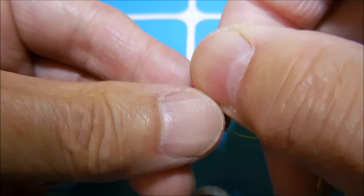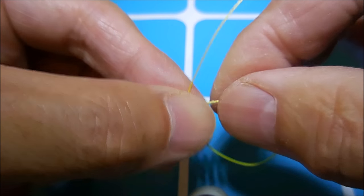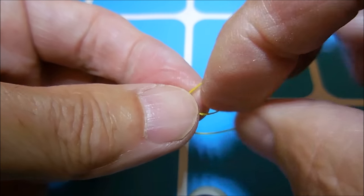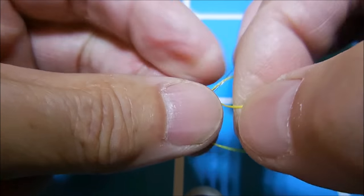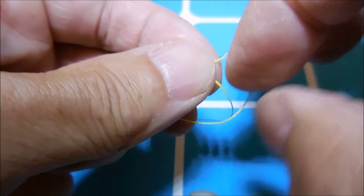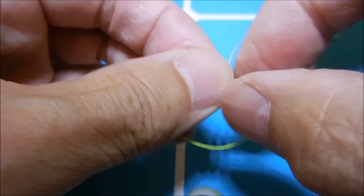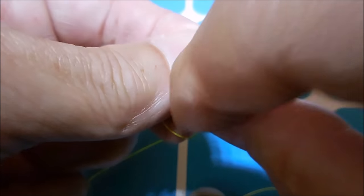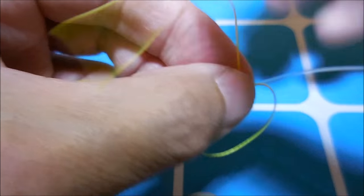Then use the tag end of the braid to make a uni knot on the long end of the mono. I prefer six loops on the uni knot.